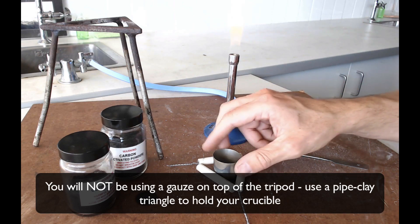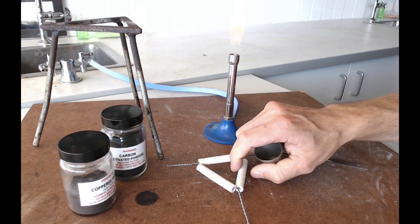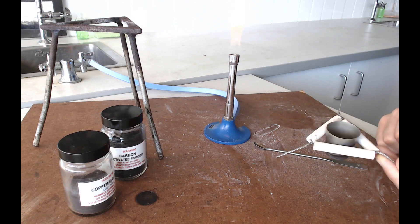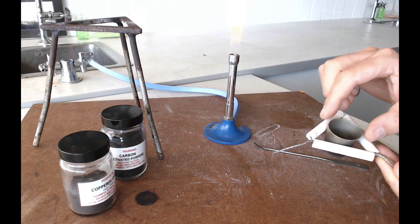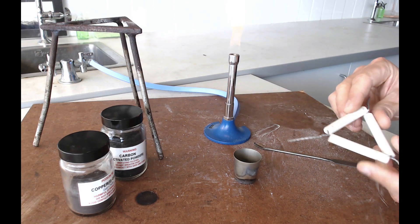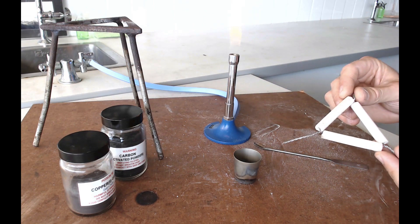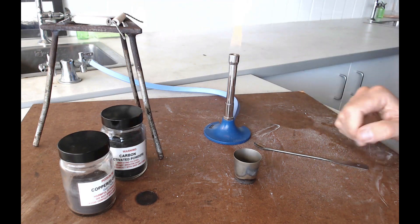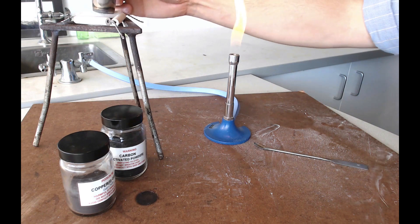So first of all, check that your crucible is not going to fall through your pipe clay triangle. If it does, get yourself a smaller pipe clay triangle or sometimes if these pipes are a little bit broken you can actually bend it a little bit to make it a bit smaller. Okay, put your pipe clay triangle on top of your tripod and then put your crucible inside it.